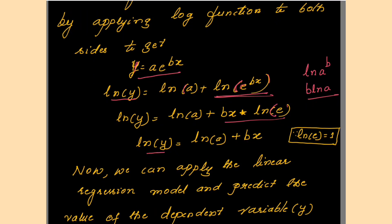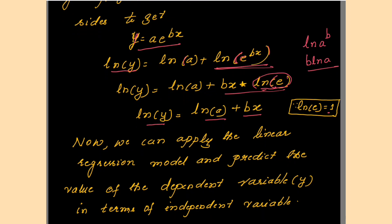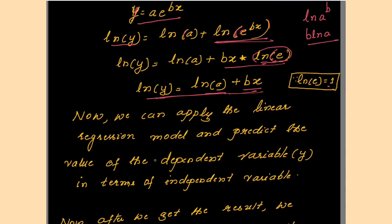Applying the log property, and noting that ln(e) = 1, we finally get: ln(y) = ln(a) + b×x. We have now obtained an equation in linear form, which means we can apply the linear regression model to predict the value of the dependent variable y in terms of the independent variable.